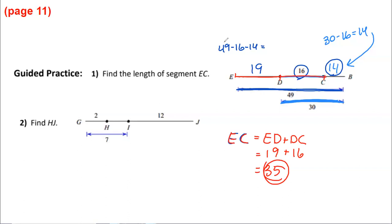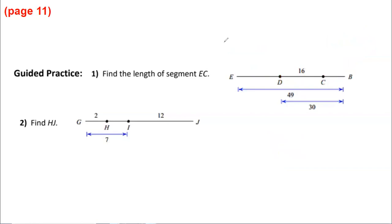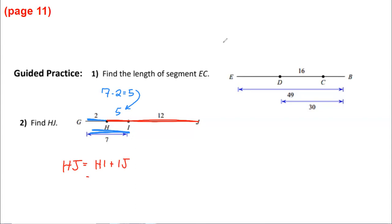For the second problem, finding HJ: HJ goes from here to here — it's 12 plus that little bit for HI. We need to solve for HI first. They told us this is 7 and this is 2, so the missing part is 7 minus 2, which is 5. Now the length of HJ equals HI plus IJ — that's 5 plus 12 — so the whole thing is 17.